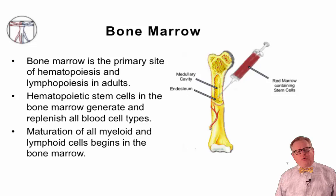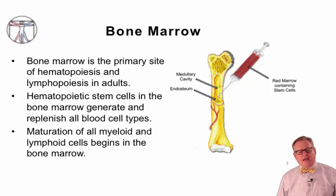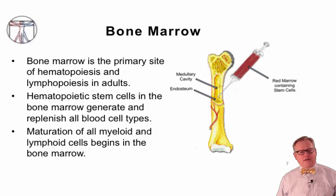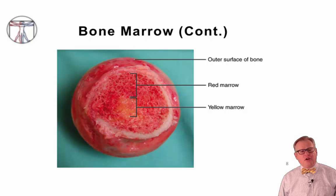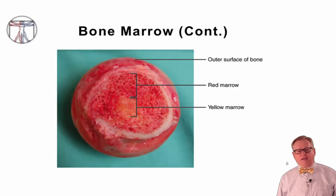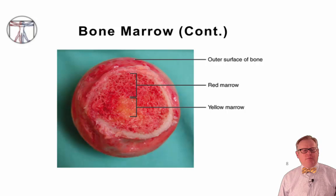The bone marrow is the primary site of hematopoiesis and lymphopoiesis in adults. Hematopoietic stem cells in the bone marrow generate and replenish all types of blood cells, and maturation of all myeloid and lymphoid lineage cells begins in the bone marrow and then continues in other lymphoid organs. The bone marrow is within the center of many bones and has a structure almost like a sponge, with red marrow and yellow marrow. The red marrow is the site of the most active generation of blood cells, while the yellow marrow has become infiltrated with fat. In infants and small children all of the marrow is red marrow, and as we age it becomes increasingly infiltrated with fat and becomes yellow marrow.